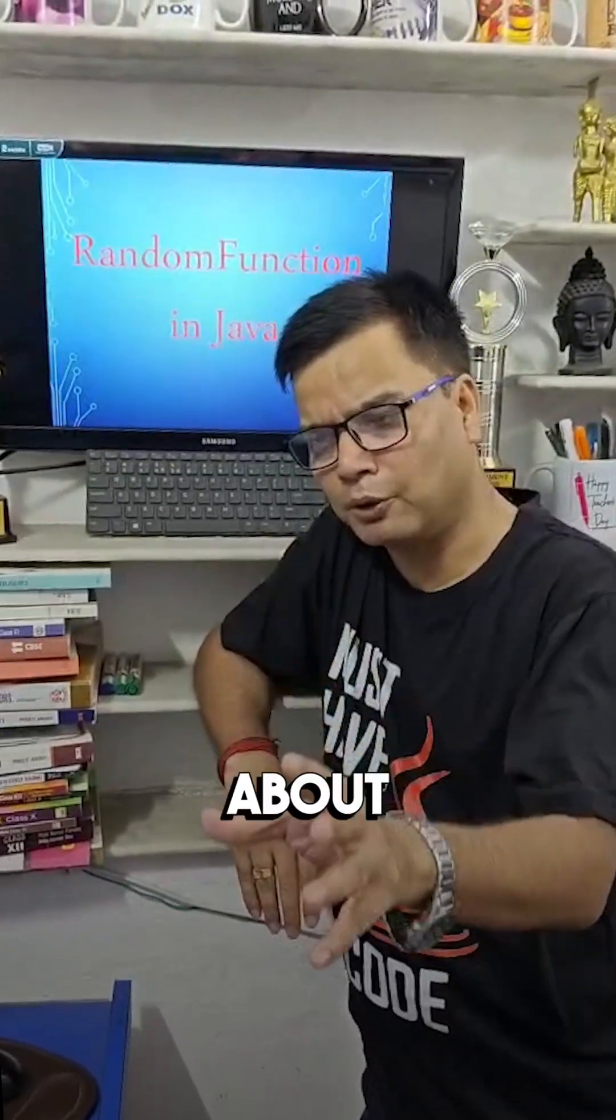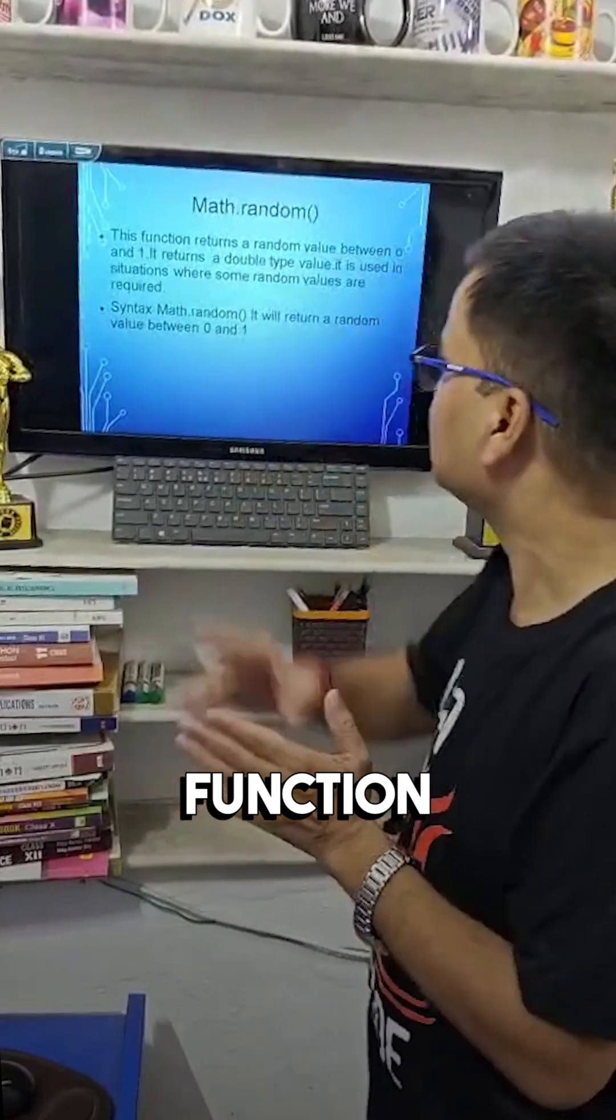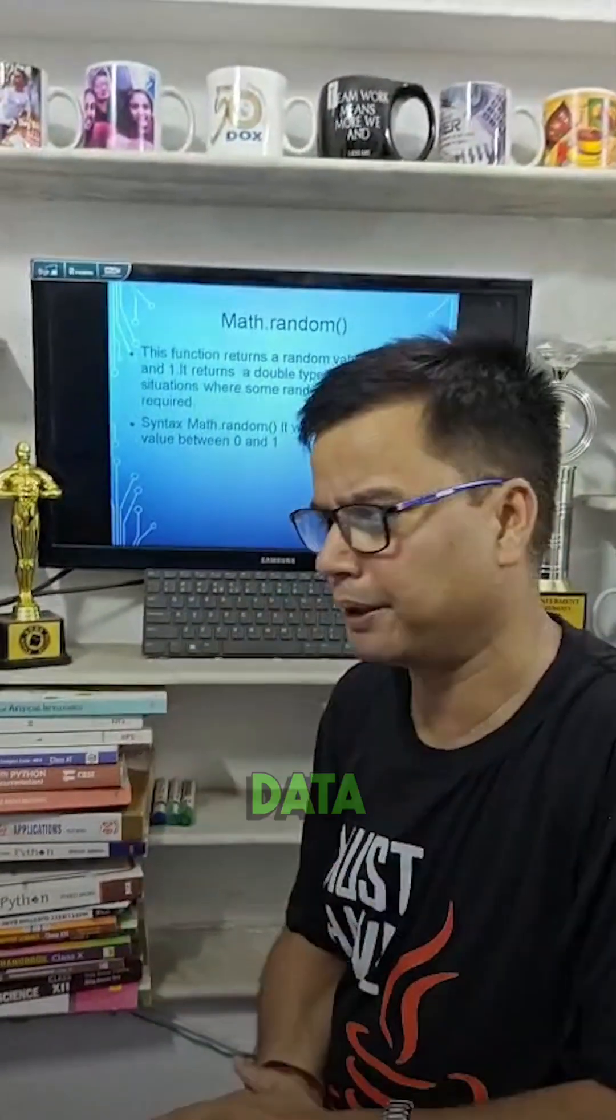Day 29, and today we talk about the Math.random function in Java. This random function returns a random value between 0 and 1. It returns a double type data.